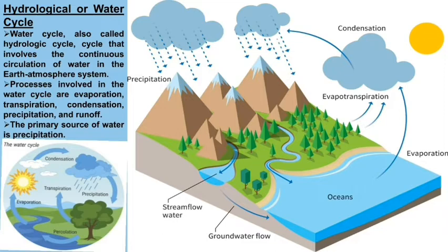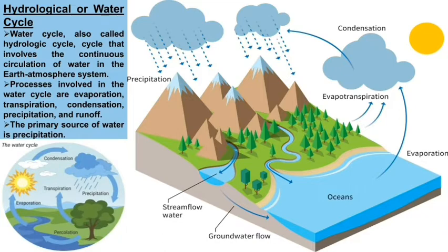Evaporation means that due to UV radiation of the Sun, water is converted into water vapors. These water vapors are condensed into minute water particles and attain a structure called clouds. That process is known as condensation.